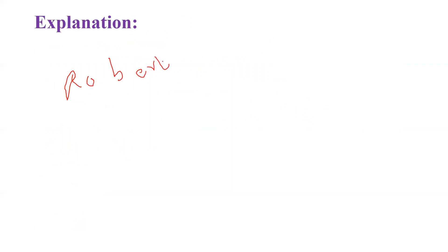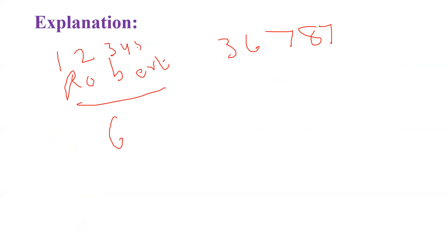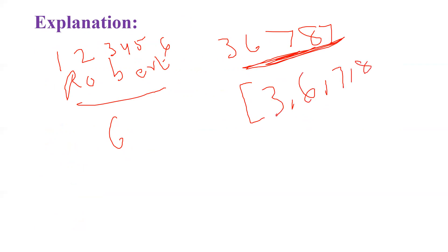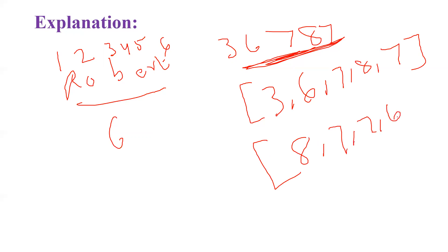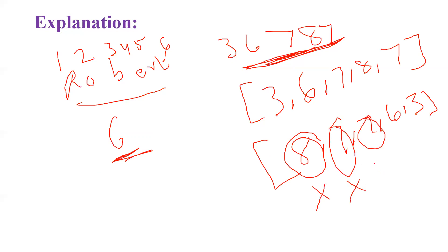Let me trace the first test case. The first employee is Robert with ID 36787. The length of the name Robert is 6. Extract the digits from the ID: 3, 6, 7, 8, 7. Make it a list and sort in descending order: 8, 7, 7, 6, 3. Now check each digit: 8 ≤ 6? No. 7 ≤ 6? No. 7 ≤ 6? No. 6 ≤ 6? Yes — stop here and get the character at the 6th position, which is 'T'.